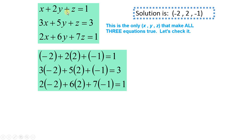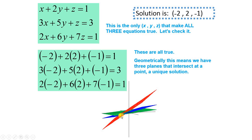Every linear equation in x, y, z represents a plane. تو یہ equation represents a plane, this represents the second plane, this represents the third plane. ان تینوں planes کو اگر ہم draw کریں — this yellow point means the point (minus two, two, minus one). جس نکتے پہ یہ planes ملتے ہیں، اسی نکتے کی values ہمارے پاس required solution set ہوتا ہے۔ Geometrically this means we have three planes that intersect at a point — a unique solution.